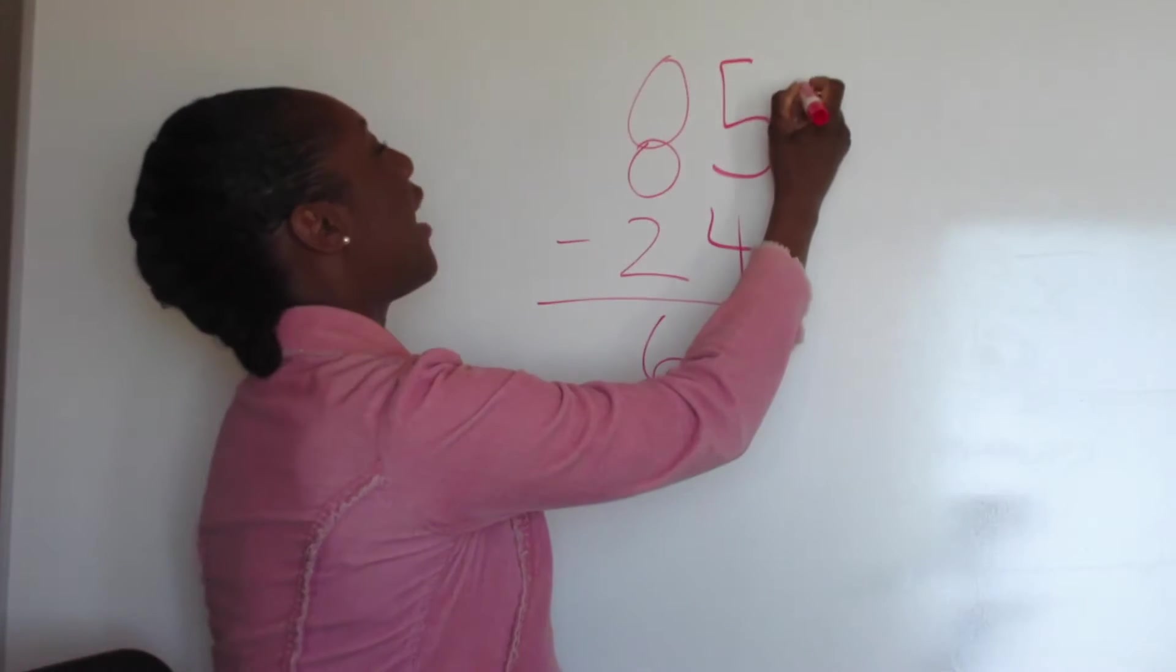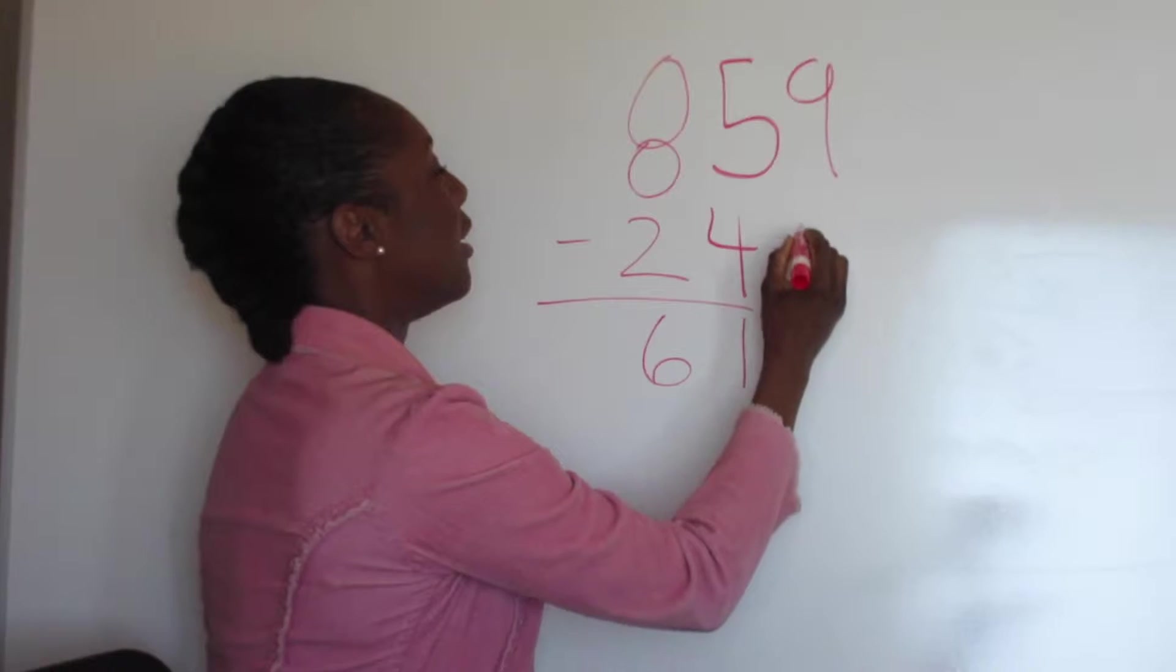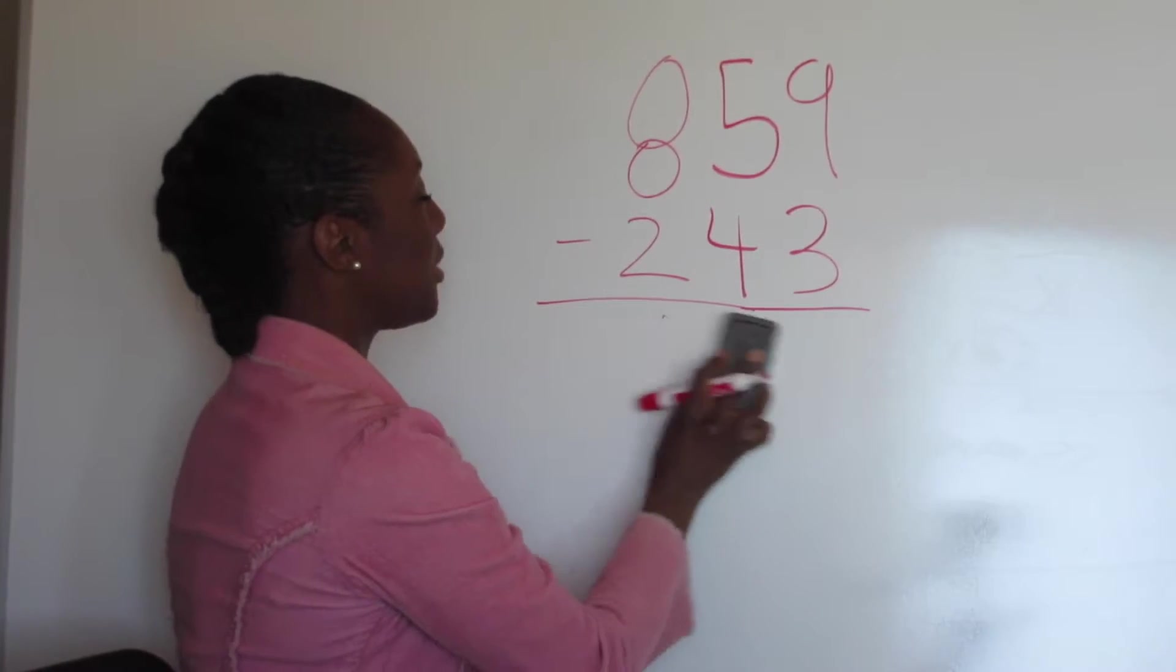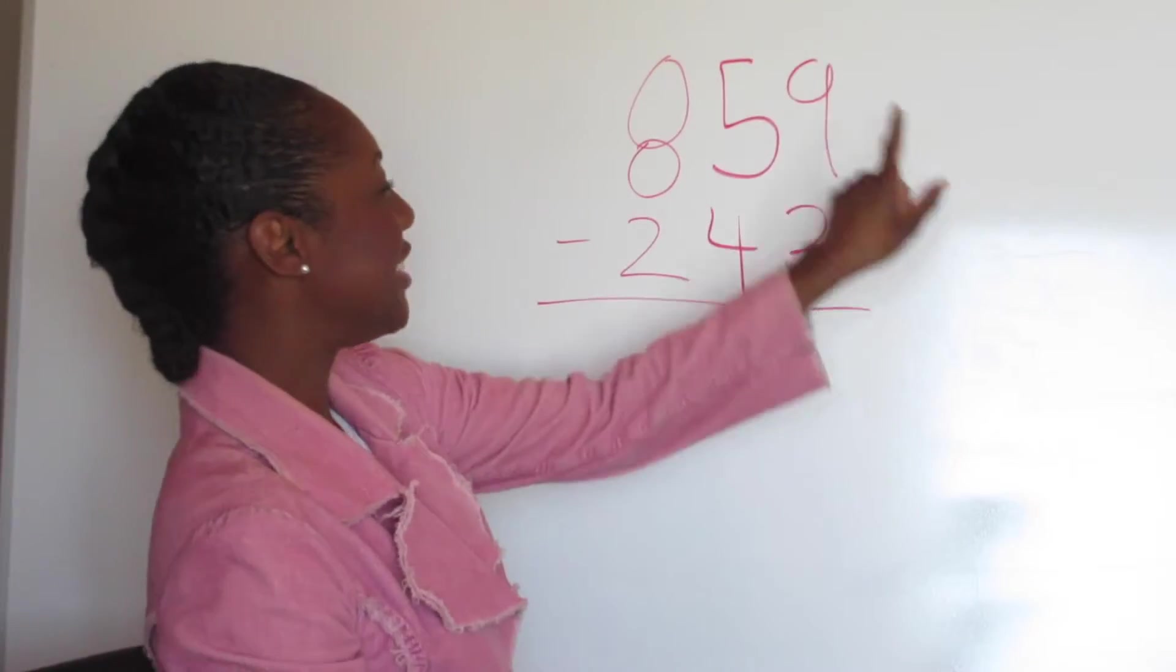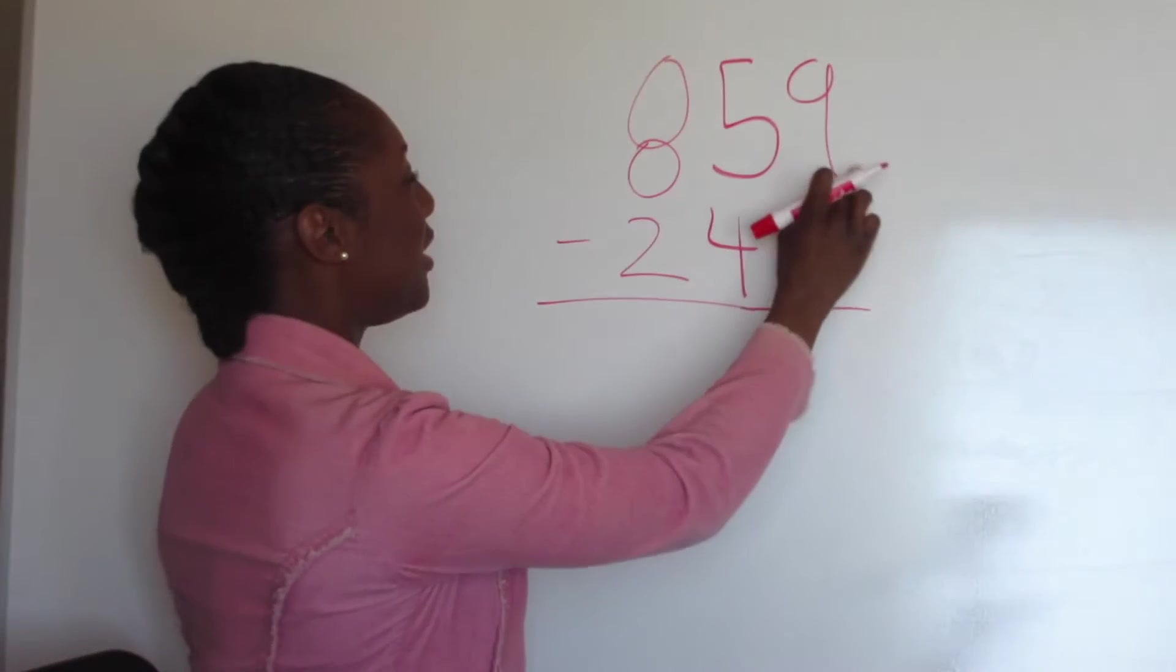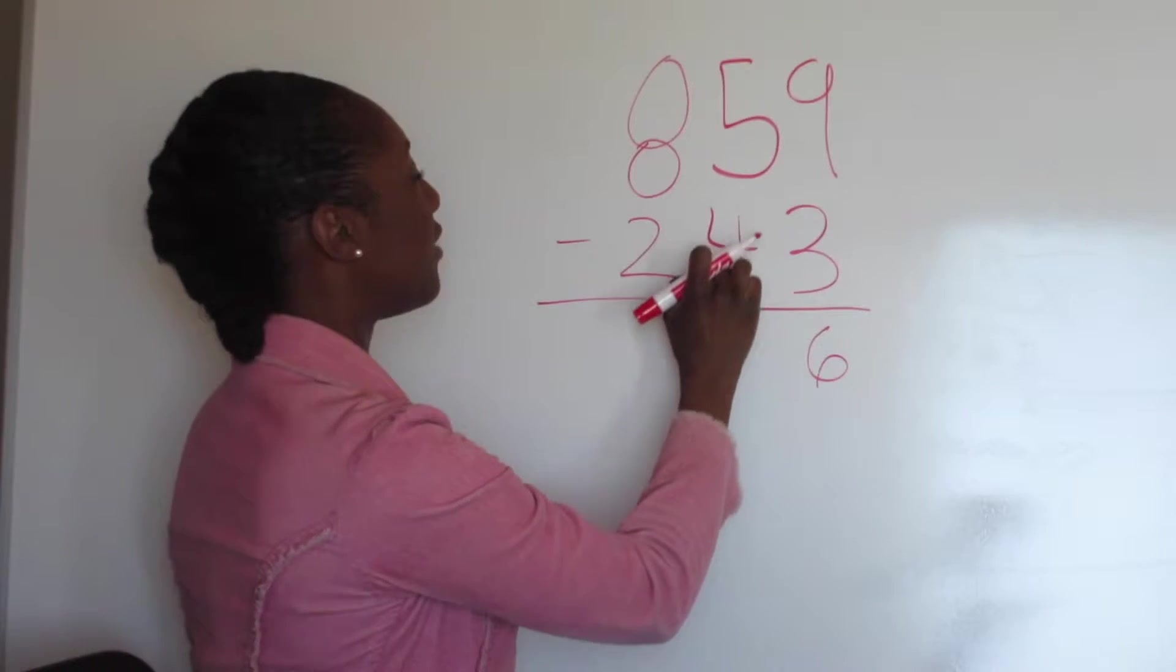What if we had 859 and then we subtract 343? That seems complicated right? But no, it's not complicated. Just start with the digit on the right. 9 minus 3: 8, 7, 6. 5 minus 4: 4, 3, 2, 1.